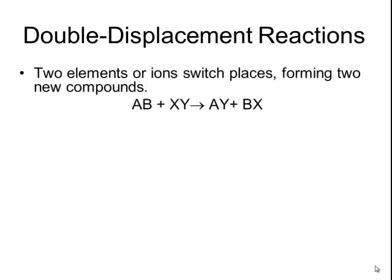A fourth type of reaction is called a double displacement reaction. In a double displacement reaction, two elements or ions switch places, forming two new compounds. The general form is AB plus XY yields AY plus BX. The general pattern is that the ions towards the outsides of each reactant combine together to form a new product, and the ions towards the insides of each reactant combine together to form a different product.